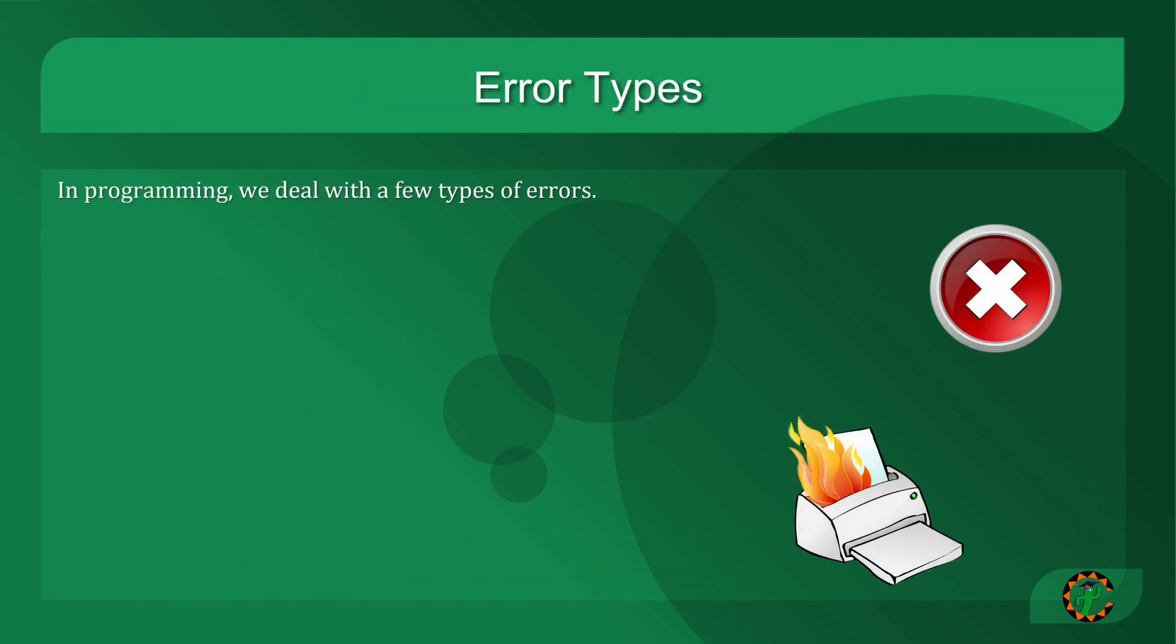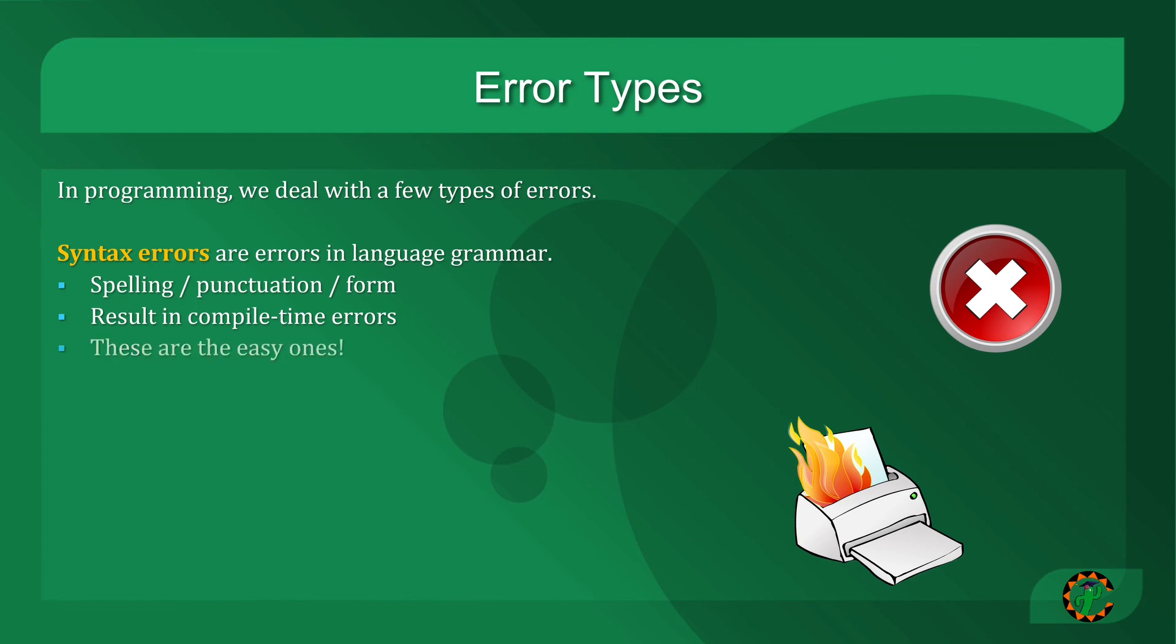So the last thing I want to talk about today is programming error types. In programming, we deal with a few types of errors, but there are two that are super common and that most problems fall into. The first is what we refer to as a syntax error, and a syntax error is a language error. It's a grammar error. In other words, the syntax of your code, of the language, is not correct. These usually are spelling, punctuation, or formatting mistakes, and they result in compile time errors. In other words, when you compile the code or when you first start it up in the case of Python, you may see a syntax error. These are typically the easiest problems to deal with because they are quickly pinpointed by the compiler or the interpreter. For example, maybe you misspelled anti-disestablishmentarianism.